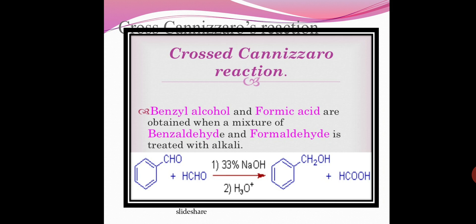Now next is cross Cannizzaro reaction. Benzyl alcohol and formic acid are obtained when a mixture of benzaldehyde and formaldehyde is treated with alkali.